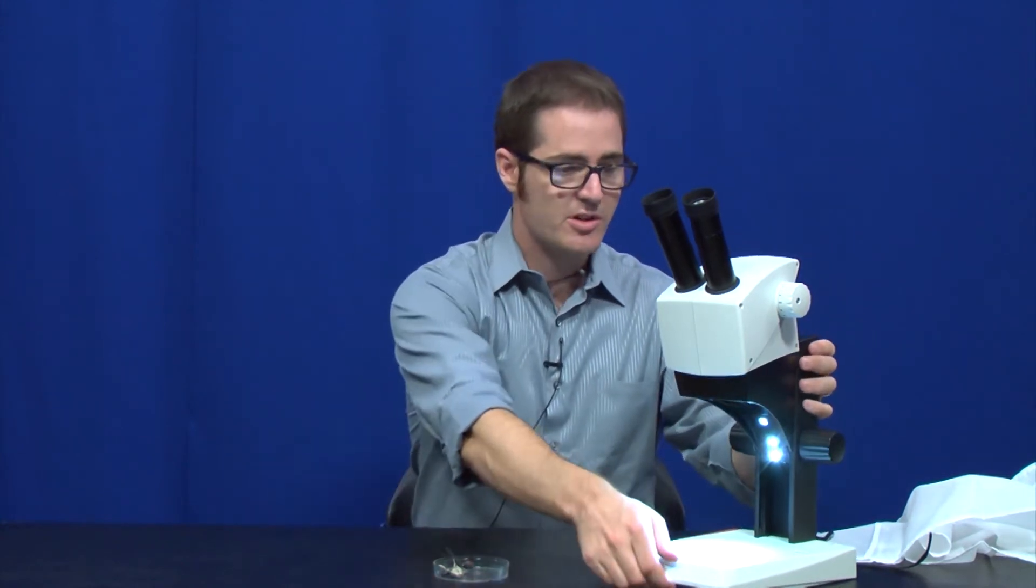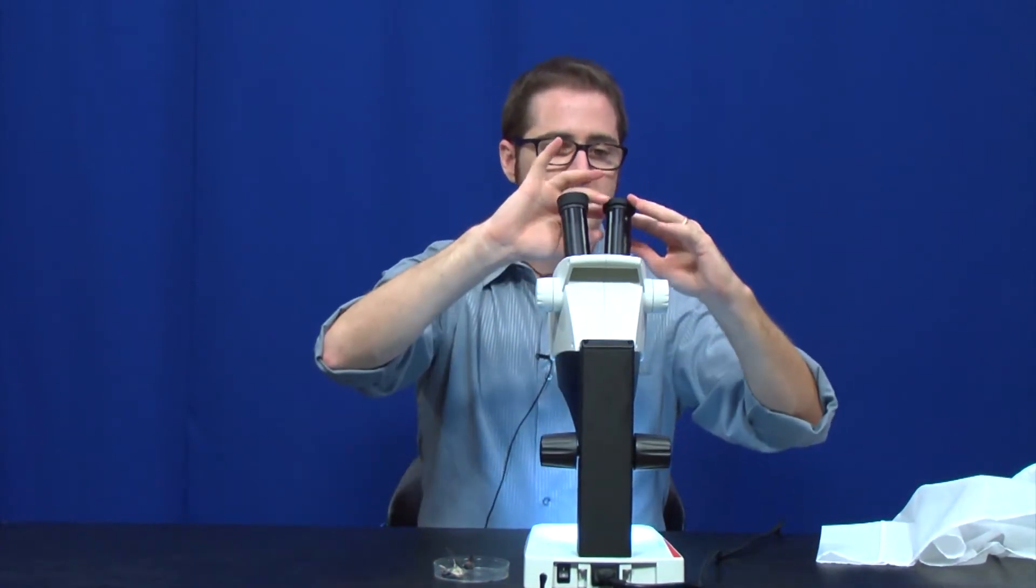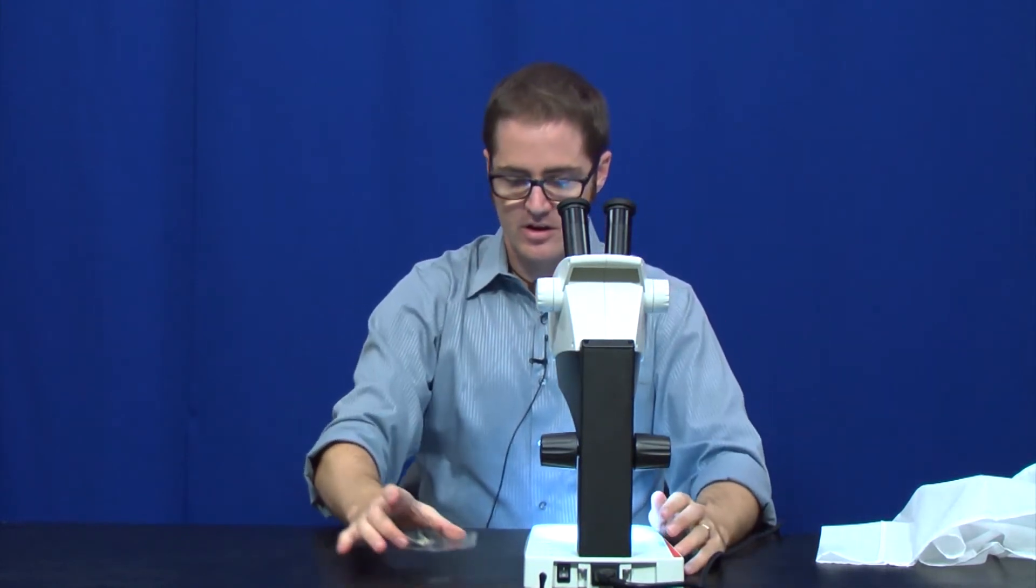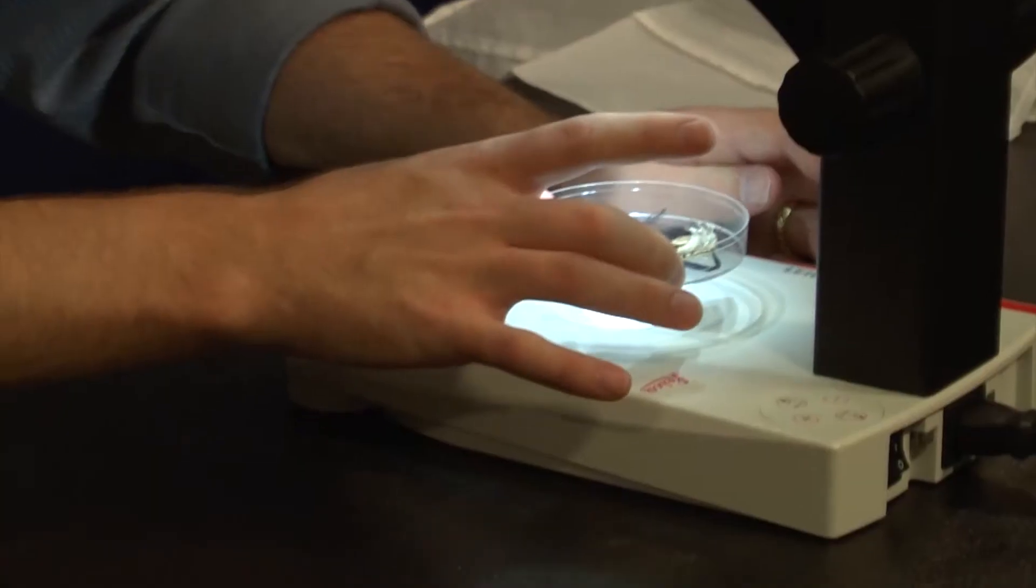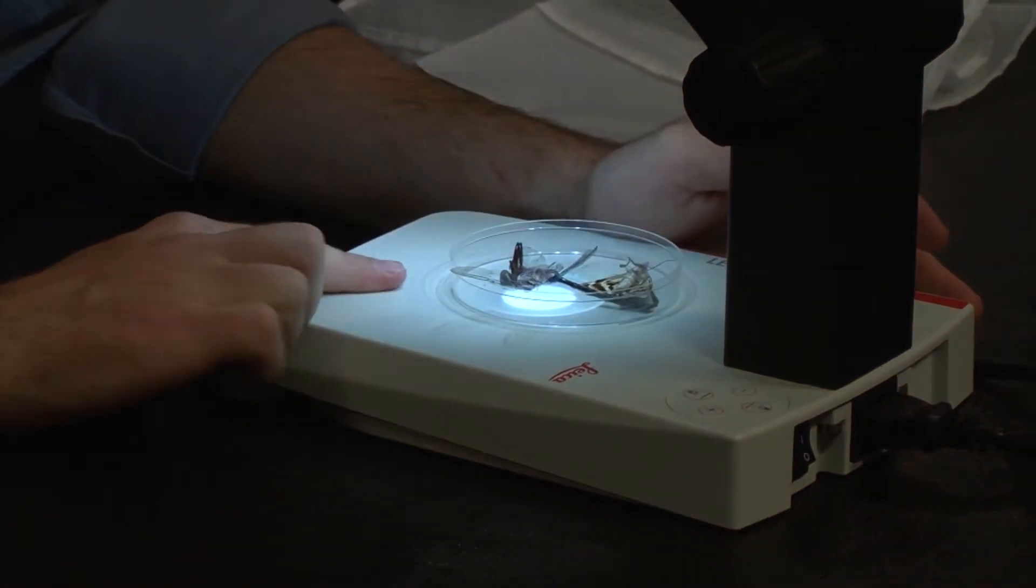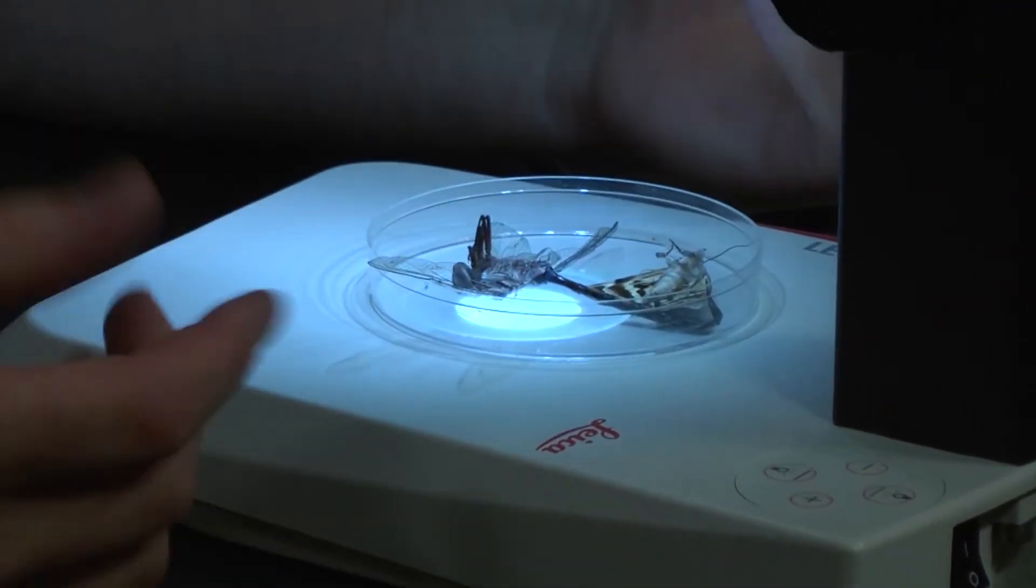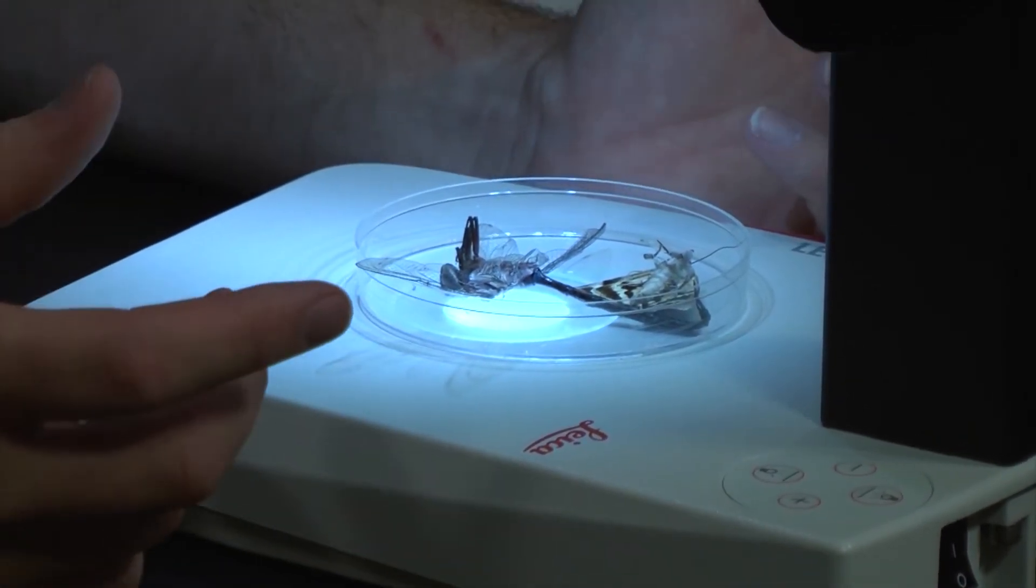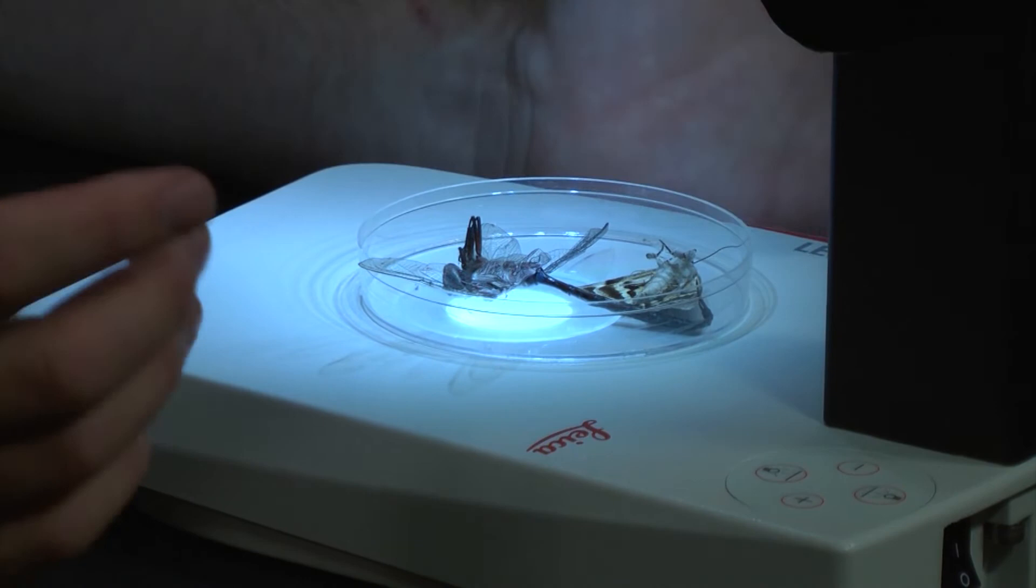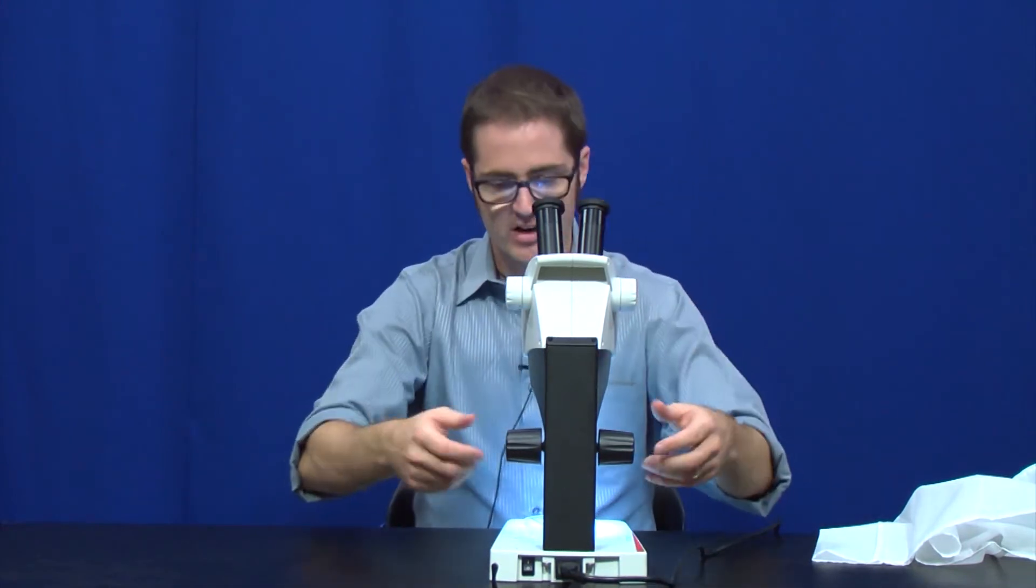In terms of actually using the microscope, it's just like any microscope you've probably used before. I'm going to roll these eye cups back down because I am going to wear my glasses. We'll take our sample here. In this case, it looks like I got a little moth and a dragonfly, and I'll put them on the base here. Another thing to note about the base is it is water resistant, so if you do have a sample that's in water or a solution of some kind, you don't have to worry too much about it sloshing out of your petri dish.